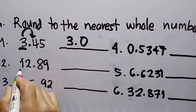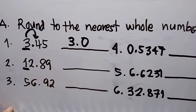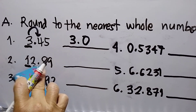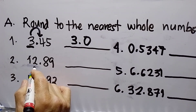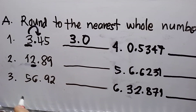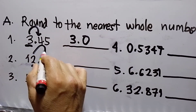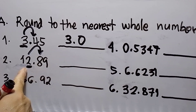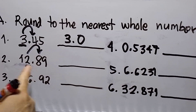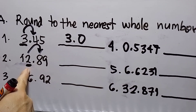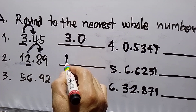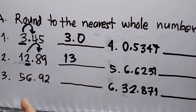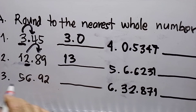Number two: I underline the ones place and make an arrow at the digit to the right. Since this digit is more than five, the underlined digit gets rounded up — add one. So this will become 13. Now how about number three?